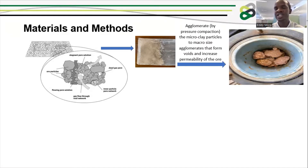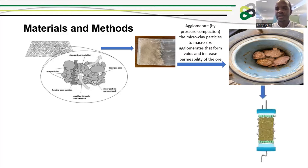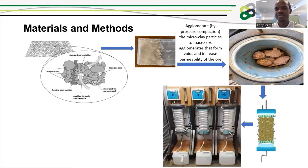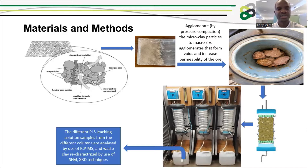At laboratory scale, the agglomerates are packed in columns, and at the bottom the pregnant solution is collected and taken for testing. Testing is done using ICP-MS, and the waste ore is characterized using XRF and XRD techniques.